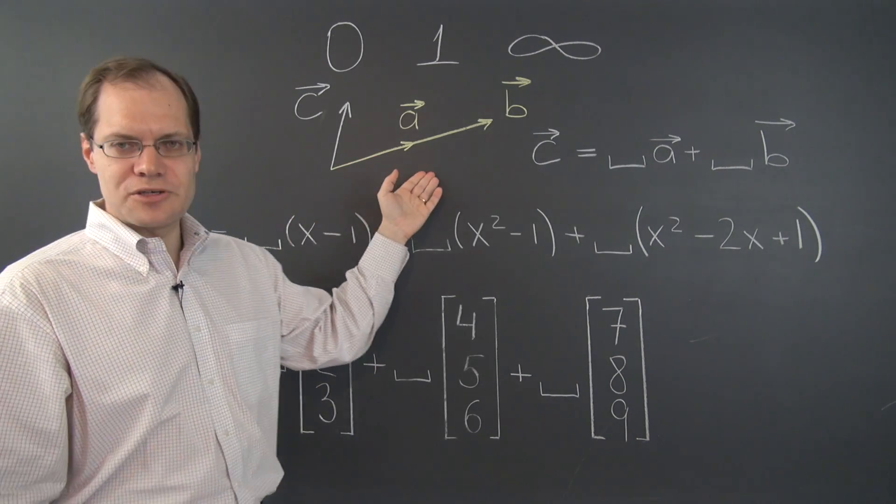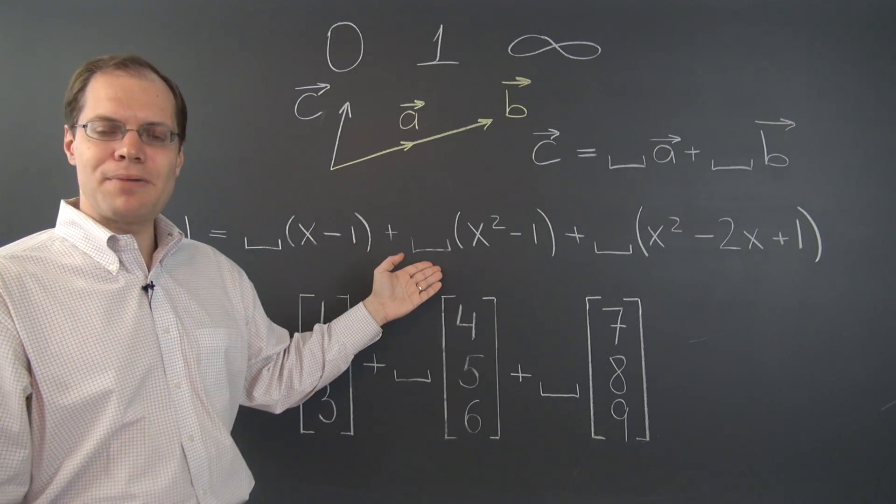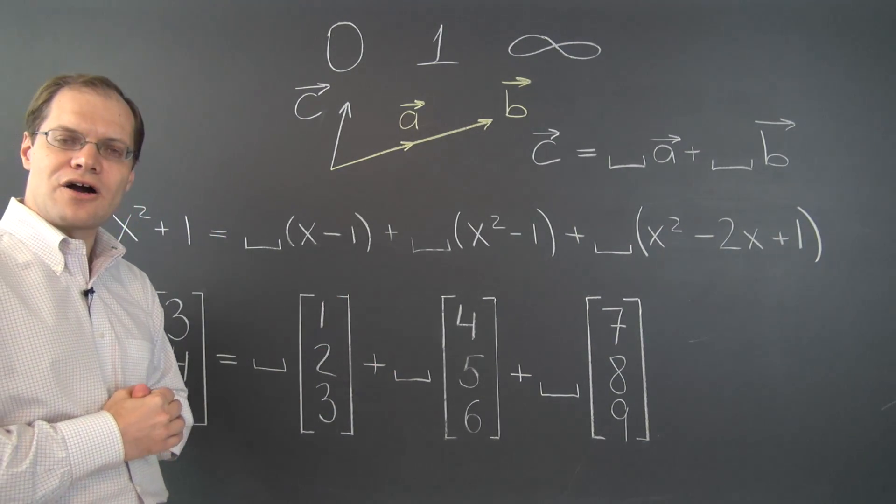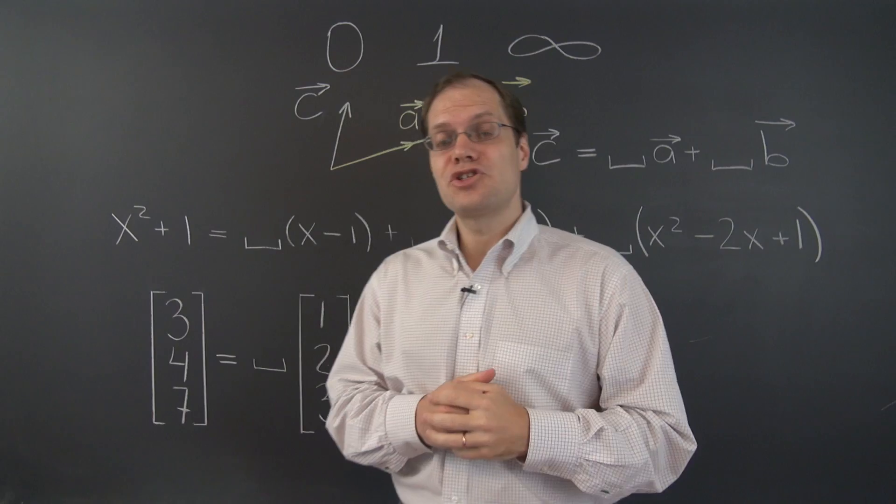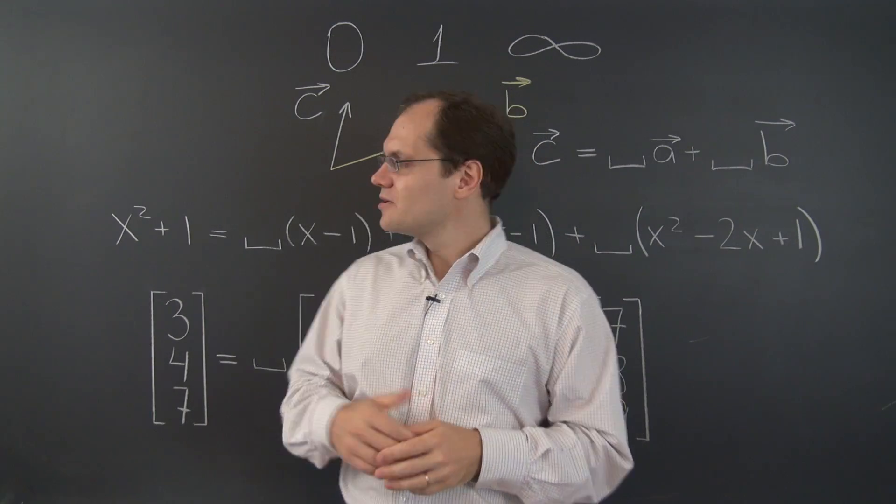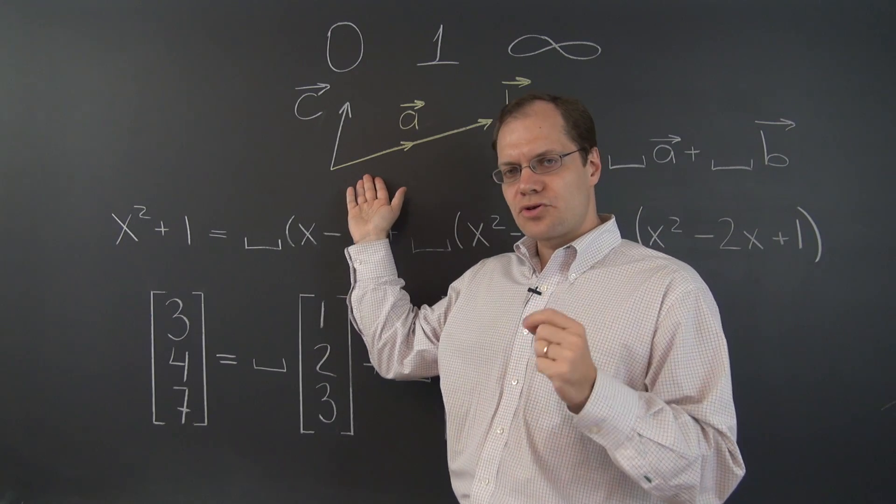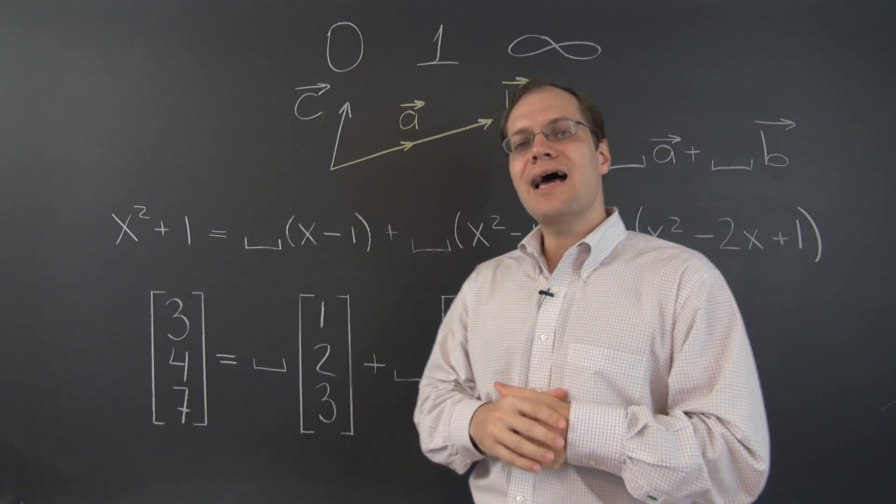The first problem comes from geometric vectors, the second from polynomials, and the last from R3, or more generally, Rn. Our starting point is, as always, geometric vectors, because that is the space from which we draw all of our ideas and intuition.